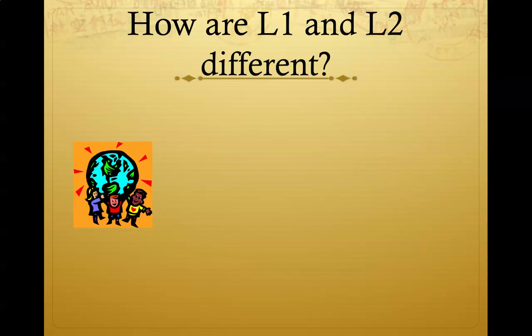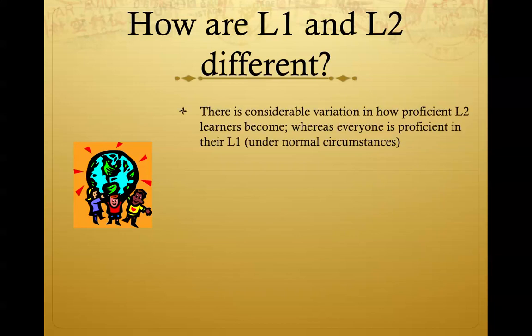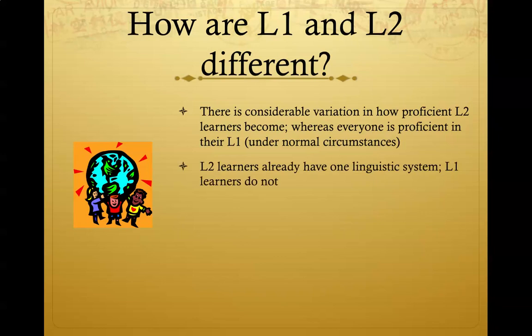Now that we've seen some similarities between learning a first and second language, let's look at the differences. Unless there are severe cognitive difficulties, everybody is proficient in their first language, whereas not everybody becomes proficient in a second language. Second language learners can rely on what they know from their first language — they already know the concept in the native language and just need the English vocabulary. For example, a student may understand the concept of fractions, but just not have the English vocabulary. That is different from a student who does not understand the concept of fractions.